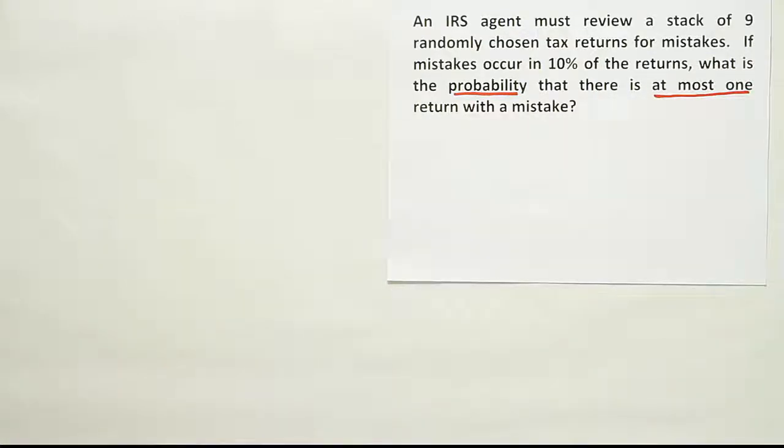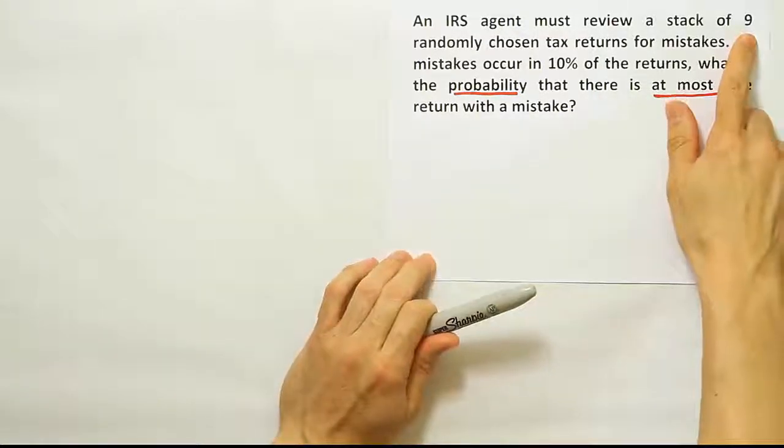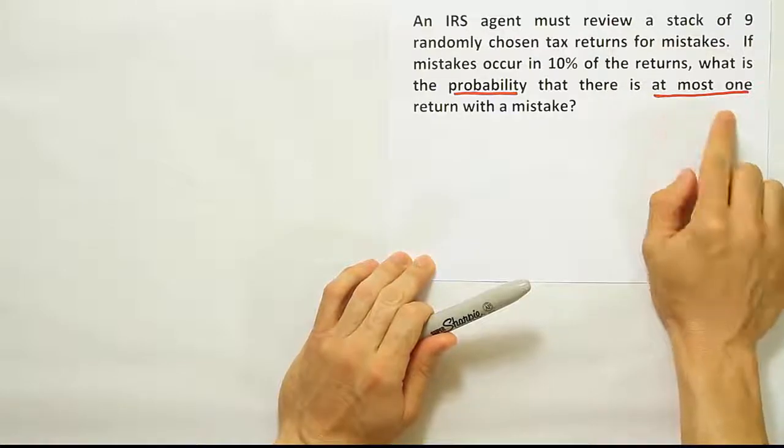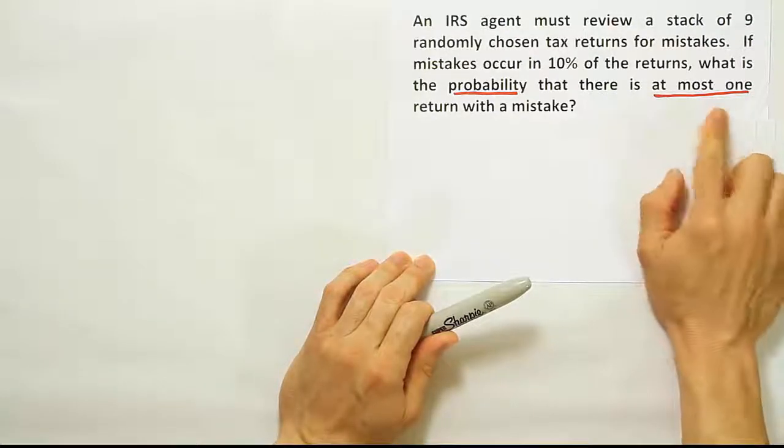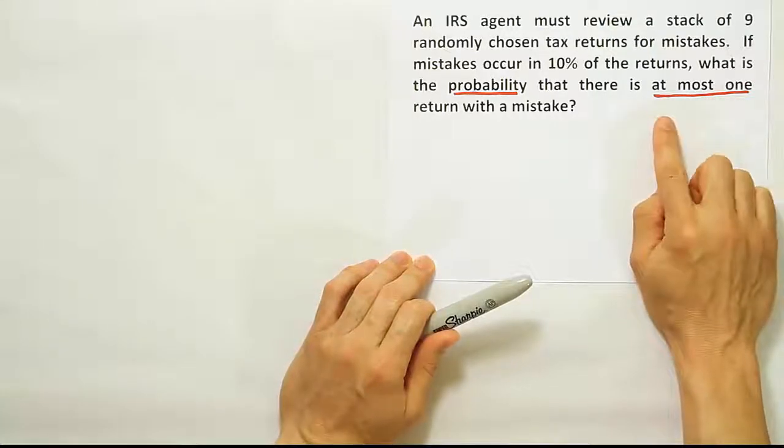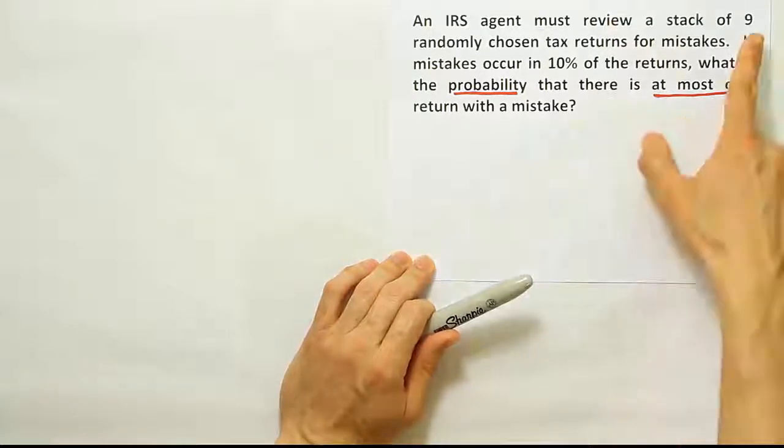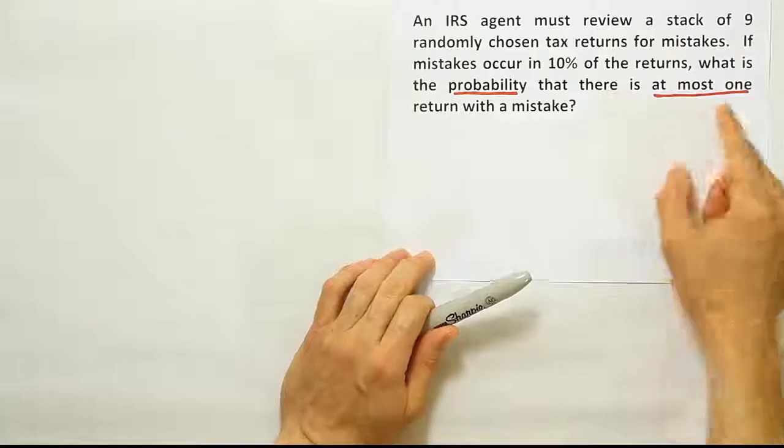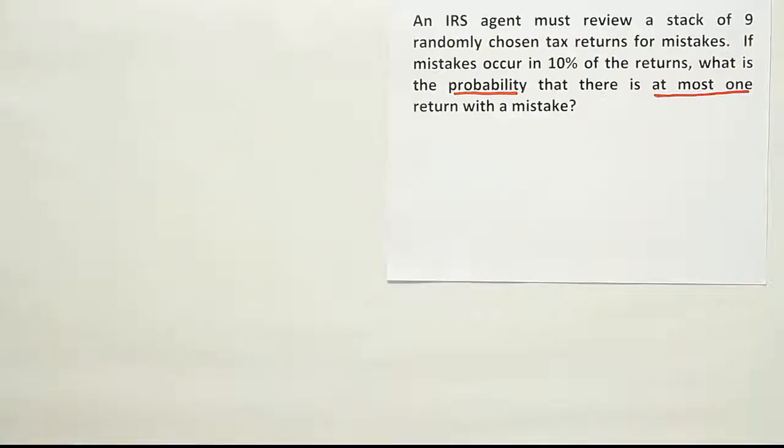Any time a subset of the total number of things you're looking at behaves a certain way—in this case, only one or zero—that means that you're usually working with a binomial probability problem. If that's the case, you should go through and check to make sure that's true by checking all the conditions for binomial probability.